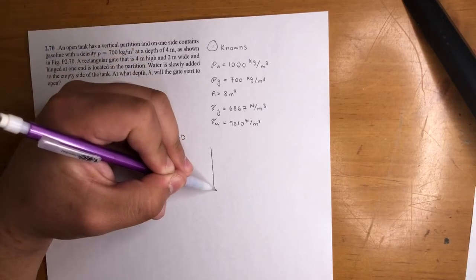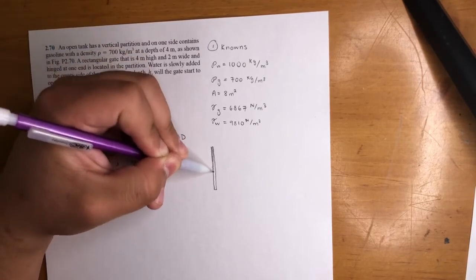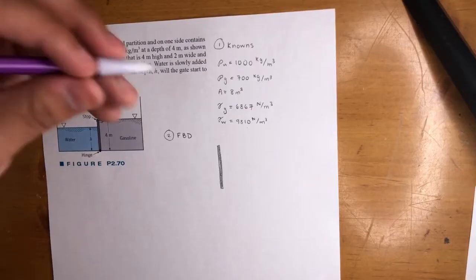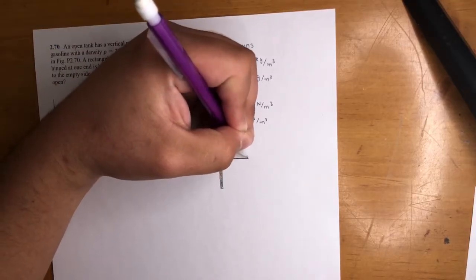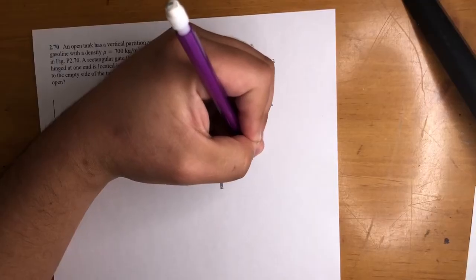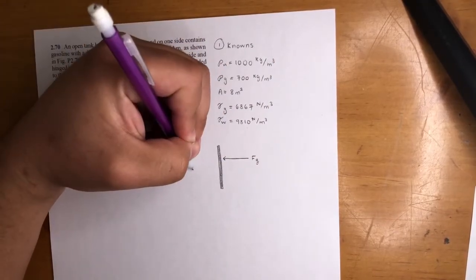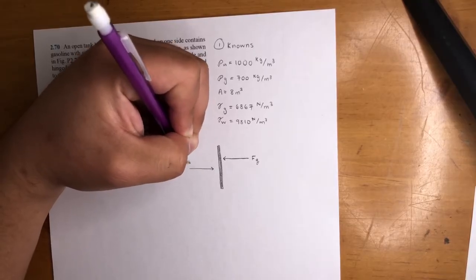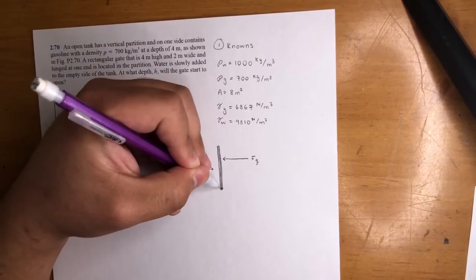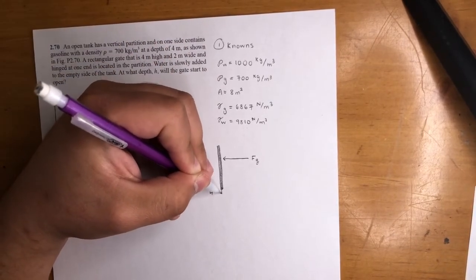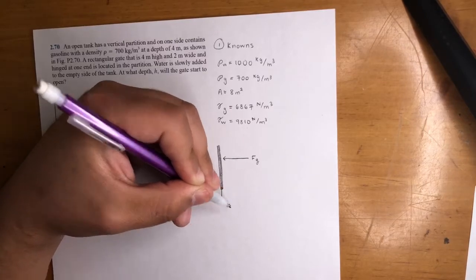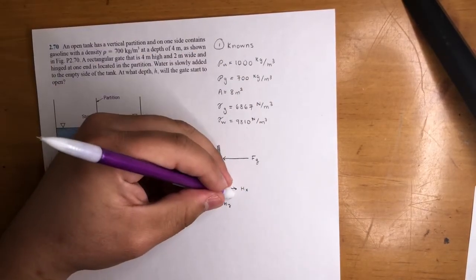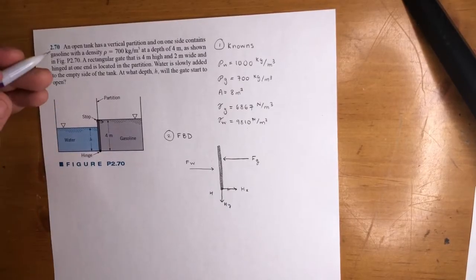So just approach it as you would any other problem. We got free body diagram. There's a partition right here. So there's a force of gasoline acting on the partition, pushing it. We don't know where it's at, right? We kind of just put it there, whatever. Force of gasoline. There's a force of water. Again, we don't know where that's at either. We'll put it right here. Force of water. Here's the hinge. Let's label this point H. So there's a reaction at a hinge, right? You know, from statics. And there's also a H_X right there.